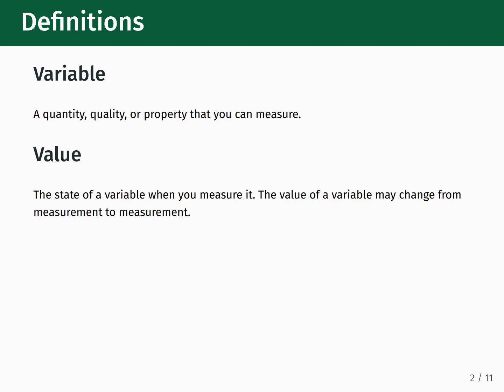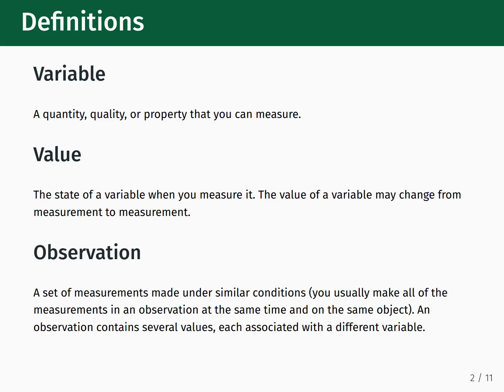The value of a variable may change from measurement to measurement, and indeed that's where the interesting findings in science come from. Observation is what connects values and variables, and it also relates variables to one another. This is because an observation is a set of measurements made under similar conditions, and an observation can contain several values, each of which gets associated with a different variable. This is how you're able to measure change over time within a system, for example.